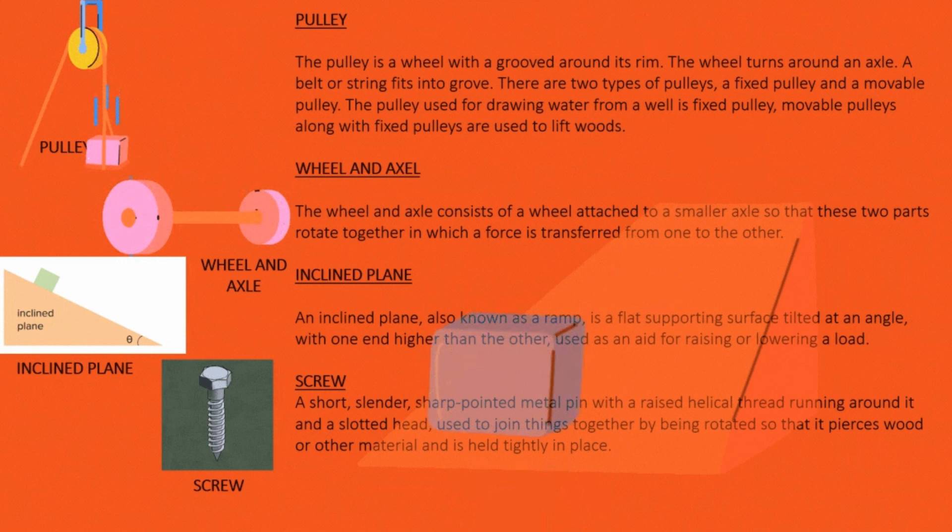Screw: A short, slender, sharp-pointed metal pin with a raised helical thread running around it and a slotted head, used to join things together by being rotated so that it pierces wood or other material and is held tightly in place.